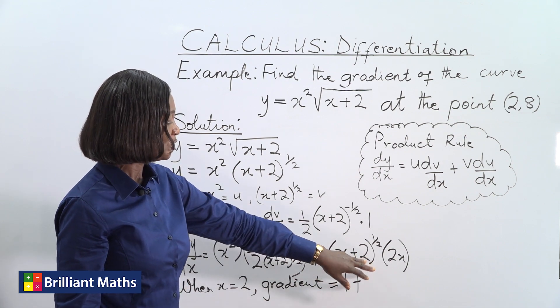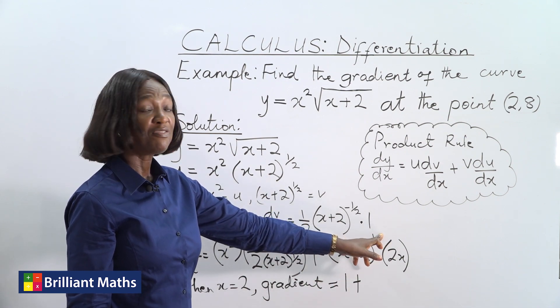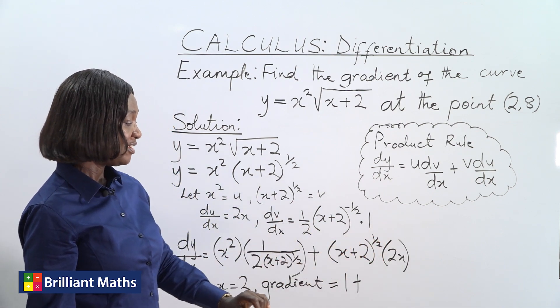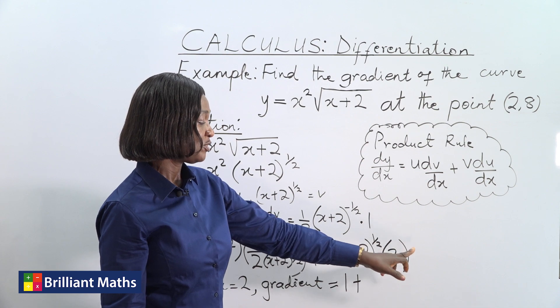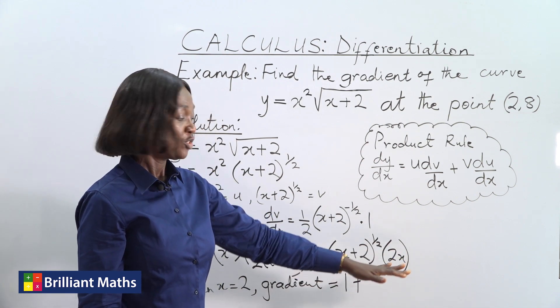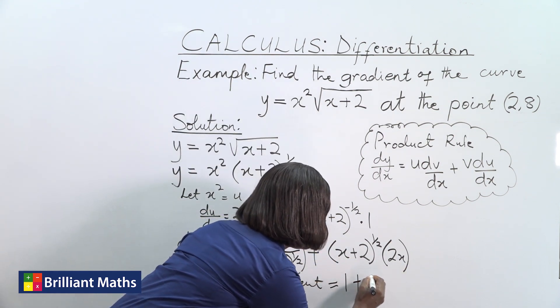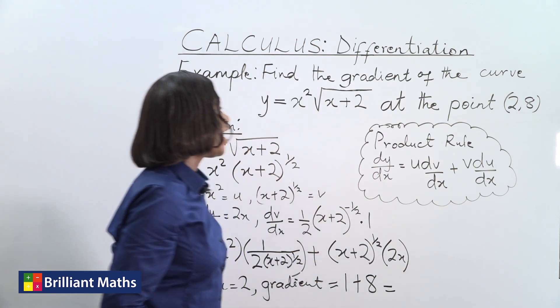2 plus 2 is 4. 2 power half, that means square root. Square root of 4 is 2. And then we have 2 times 2, which is 4. So here we have 2 times 4, which is 8.